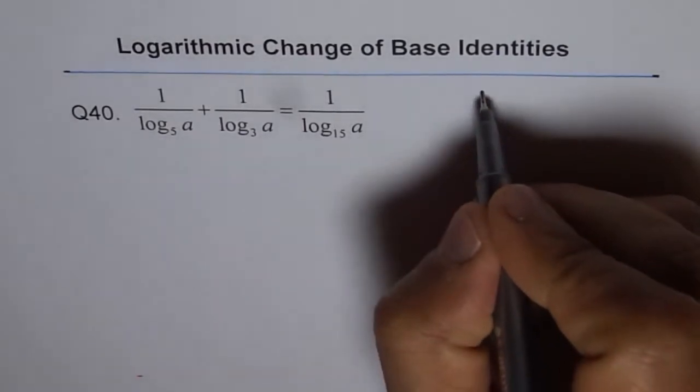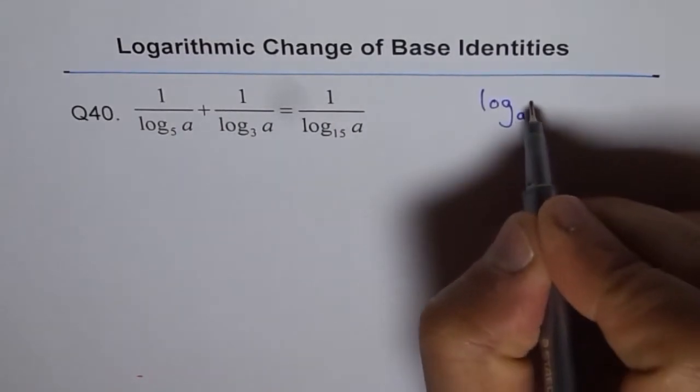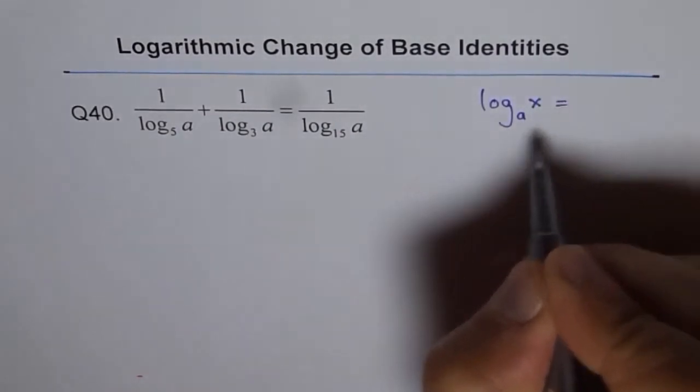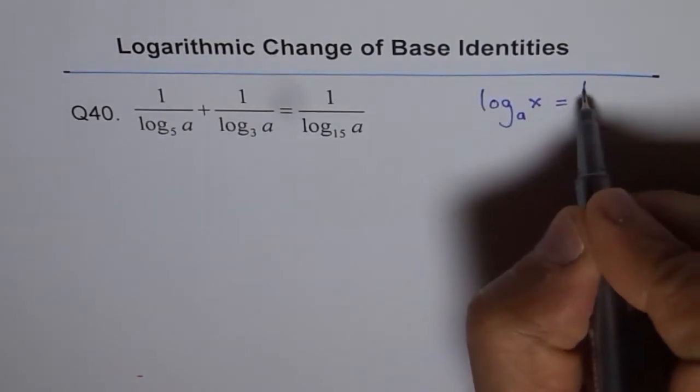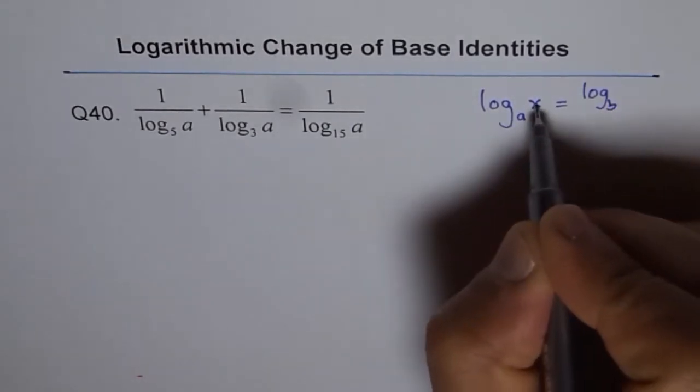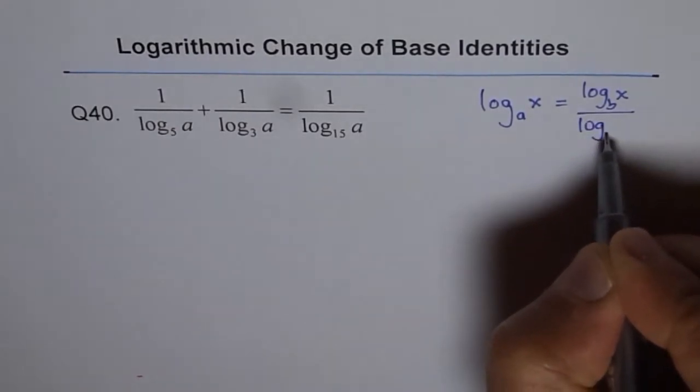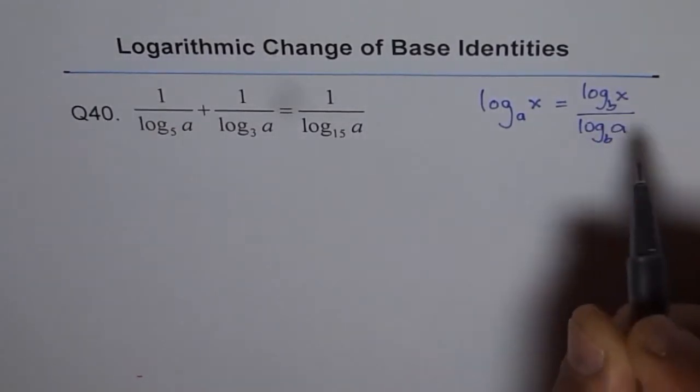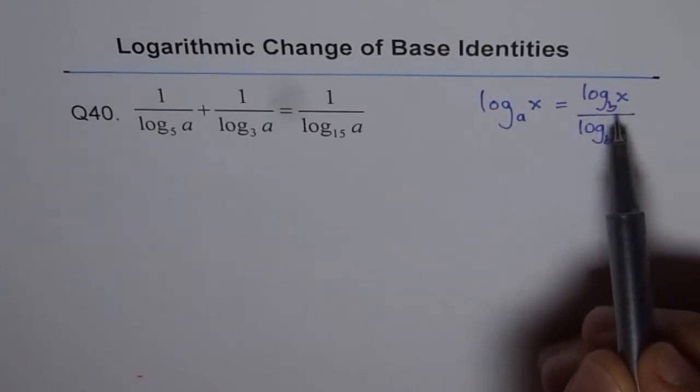Let's say we have log_a(x) and we want to change this base from a to b. It's done like this: you want to change from a to b, write log_b(x) divided by log_b(a). That's how you change the base of logarithms from a to b.